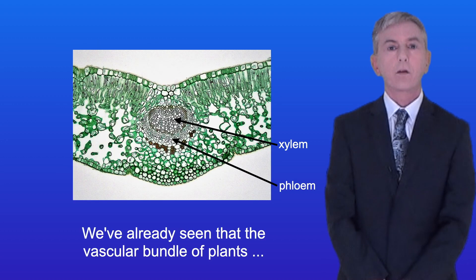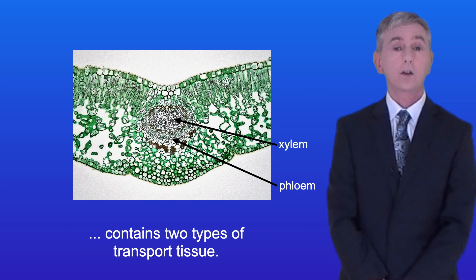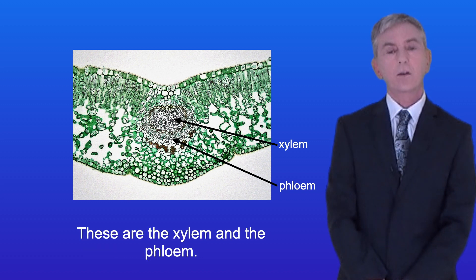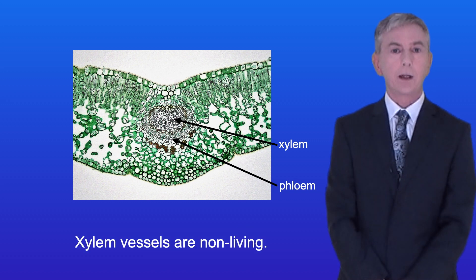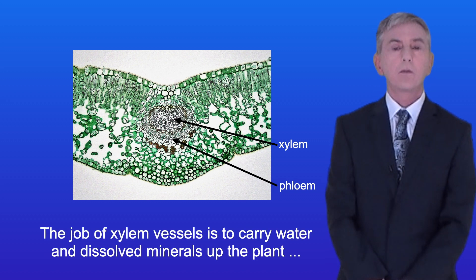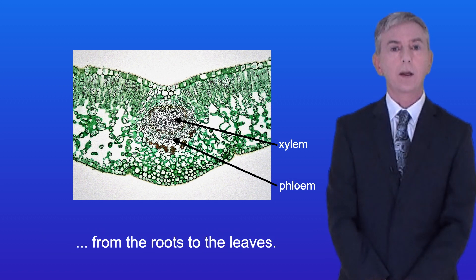We've already seen that the vascular bundle of plants contain two types of transport tissue. These are the xylem and the phloem. Xylem vessels are non-living and the job of xylem vessels is to carry water and dissolved minerals up the plant from the roots to the leaves.